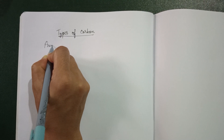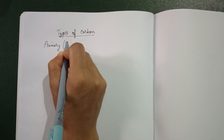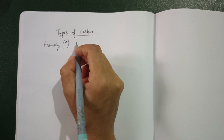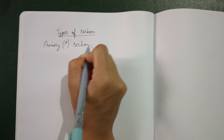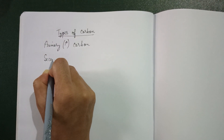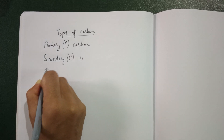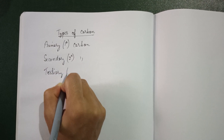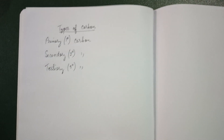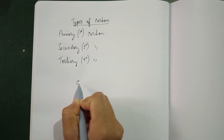When I say types of carbon, we are going to learn about primary carbon, symbolically represented as 1°, secondary carbon, and tertiary carbon. First and foremost, carbon has four valency — I have drawn one carbon, two carbon, three carbon — and carbon always maintains four bonds.